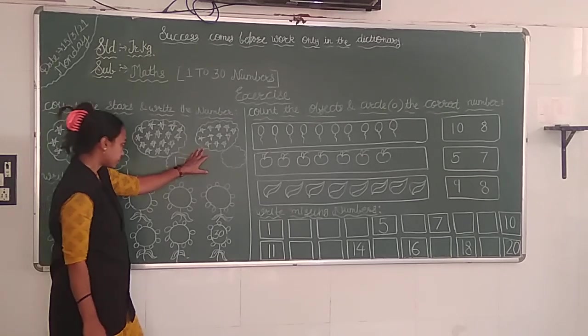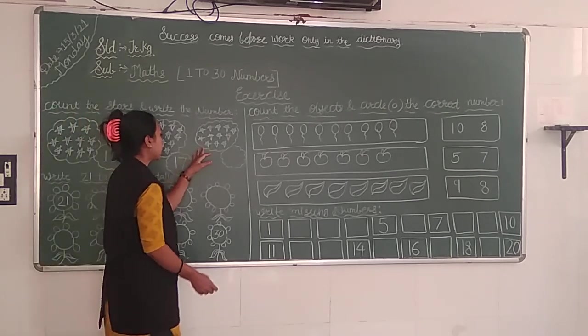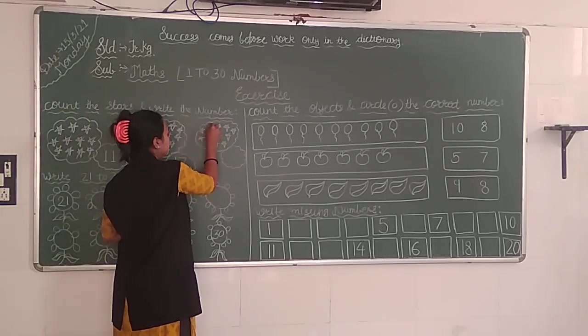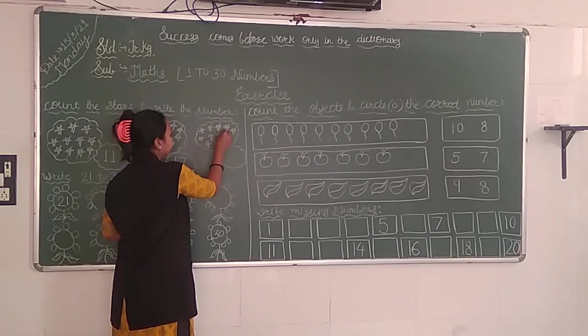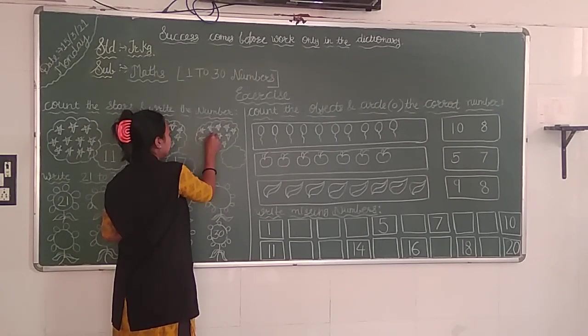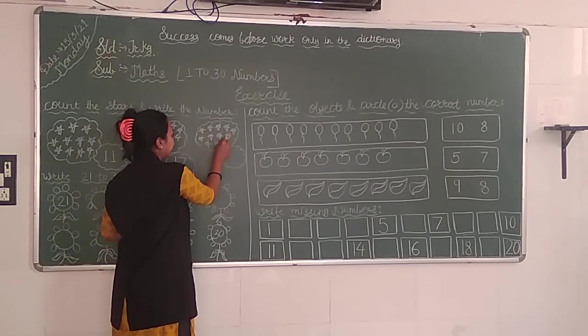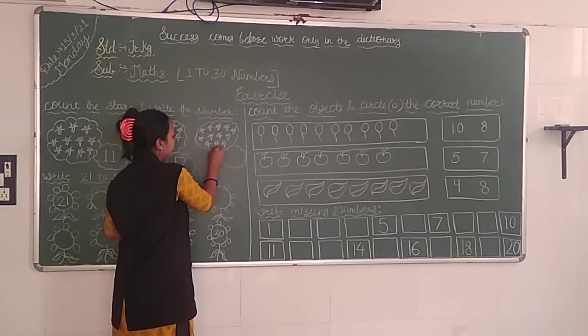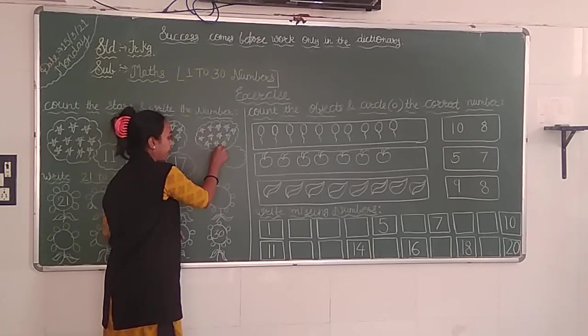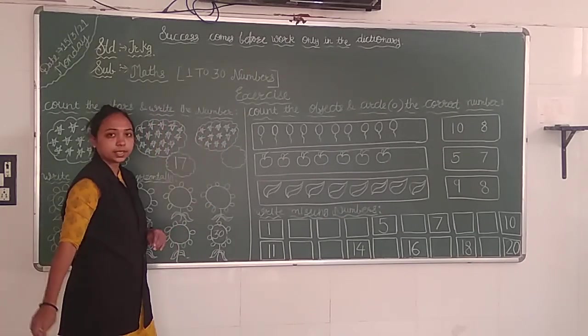Then we start counting here: 1, 2, 3, 4, 5, 6, 7, 8, 9, 10, 11 and 12. What does it start at here?